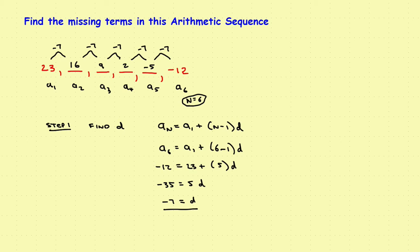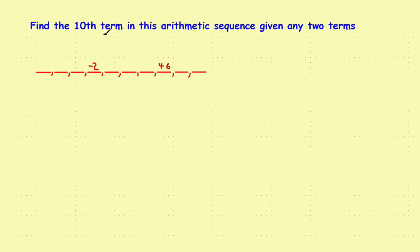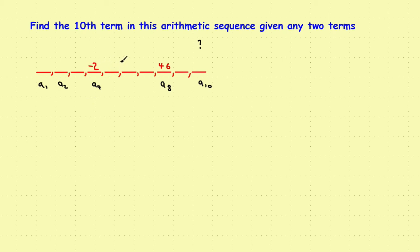In the last example, we want to find the 10th term of an arithmetic sequence given any two terms — in this case, not the first term. Drawing a picture and labeling: a_sub_4 and a_sub_8 are the known terms, and a_sub_10 is what we want. We'll do it in two steps: first find the common difference, then find the 10th term.